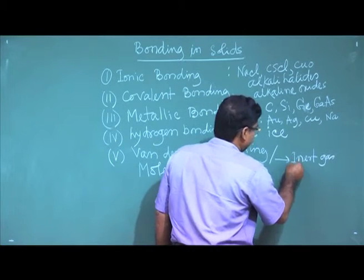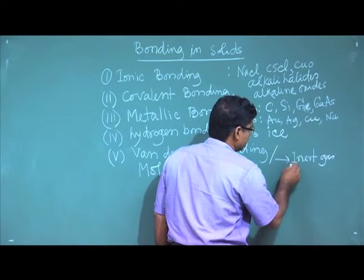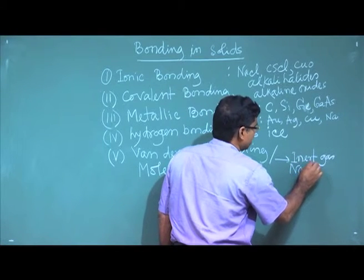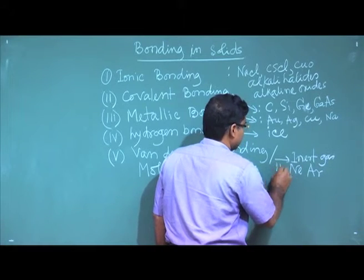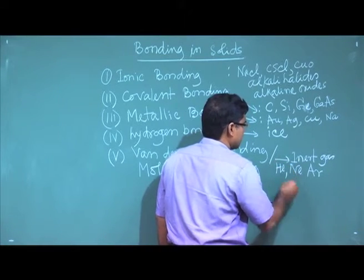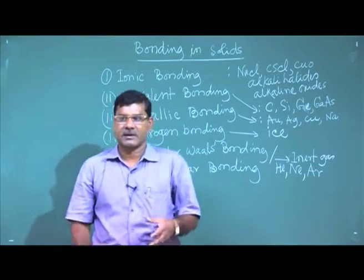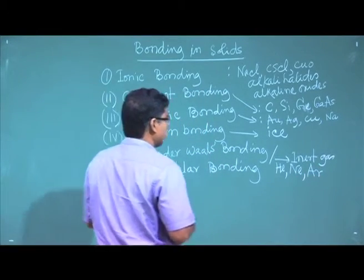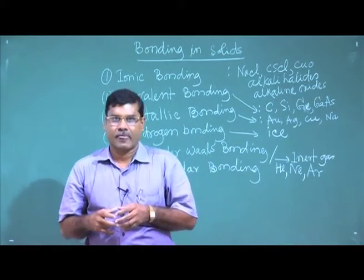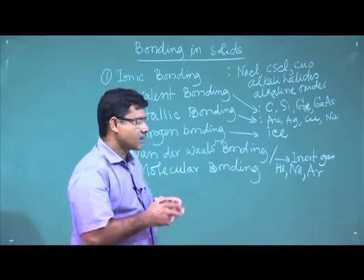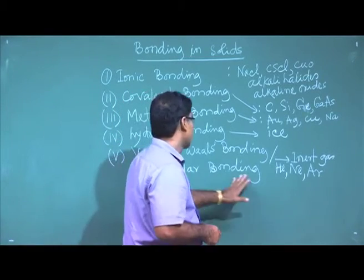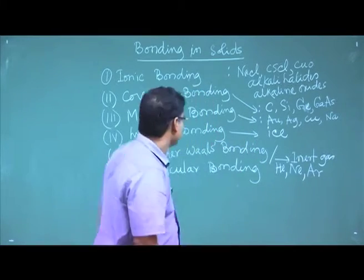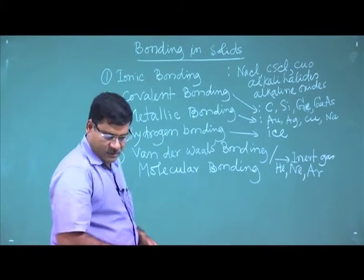The inert gases are neon, argon, and helium. When these inert gases form solids at low temperature, the atoms are held together because of molecular bonding or van der Waals bonding. I will now discuss each type one by one.